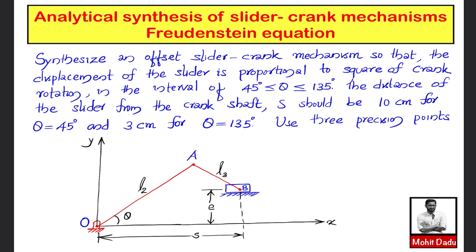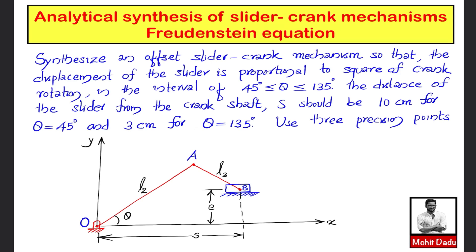This forms the functional relation. The interval of theta is given as 45 degrees to 135 degrees, so theta-initial is 45 and theta-final is 135. The slider distance s should be 10 cm for theta = 45 and 3 cm for theta = 135. These boundary conditions will be used to find the actual function between slider displacement s and crank angle theta. We will also consider three precision points, and first we will derive the Freudenstein equation for the slider crank mechanism.